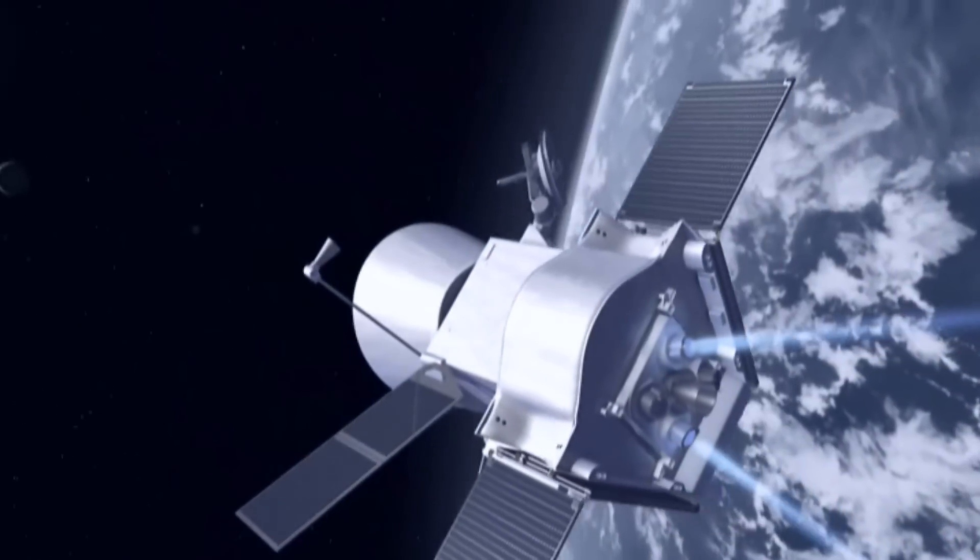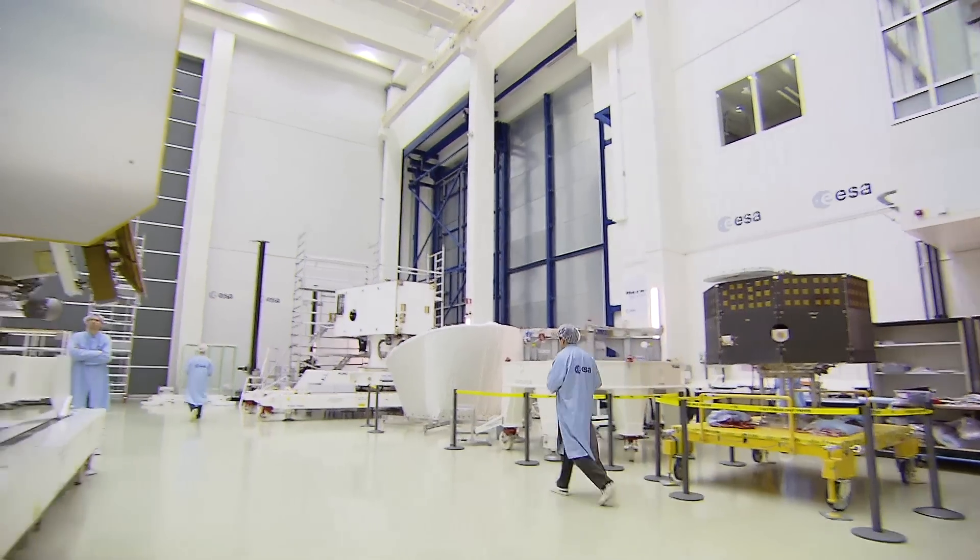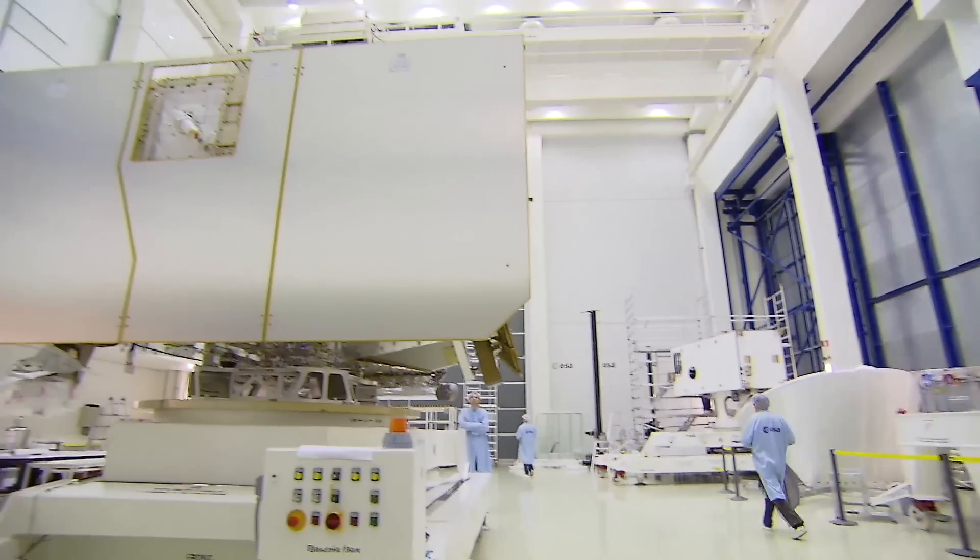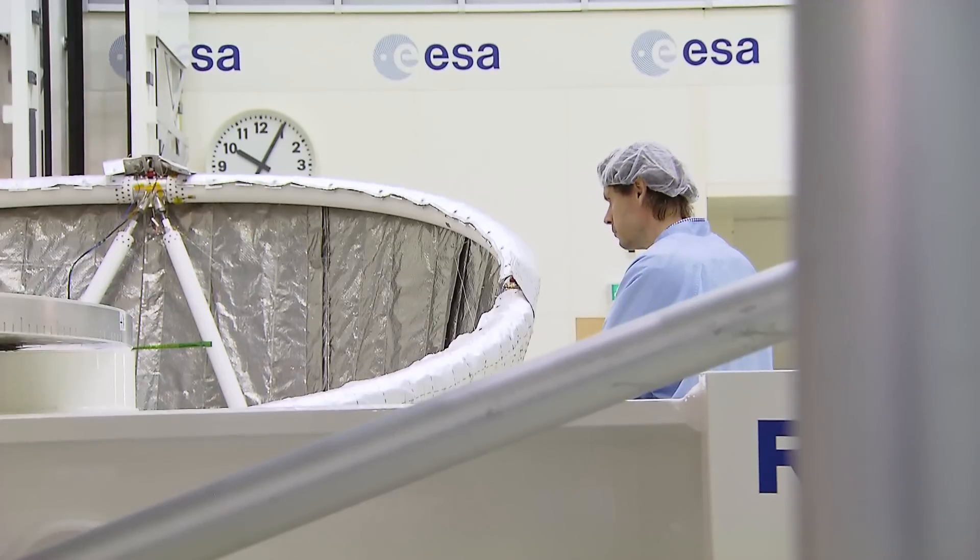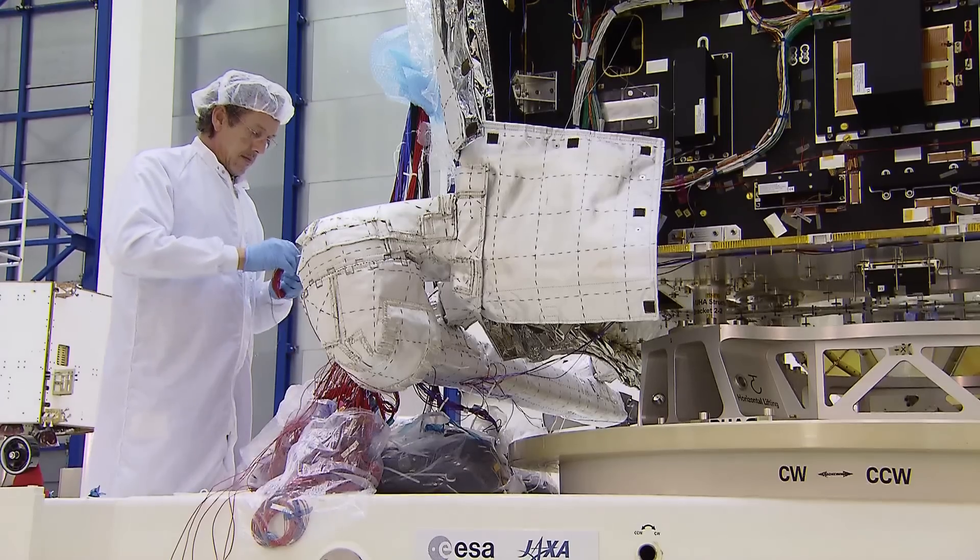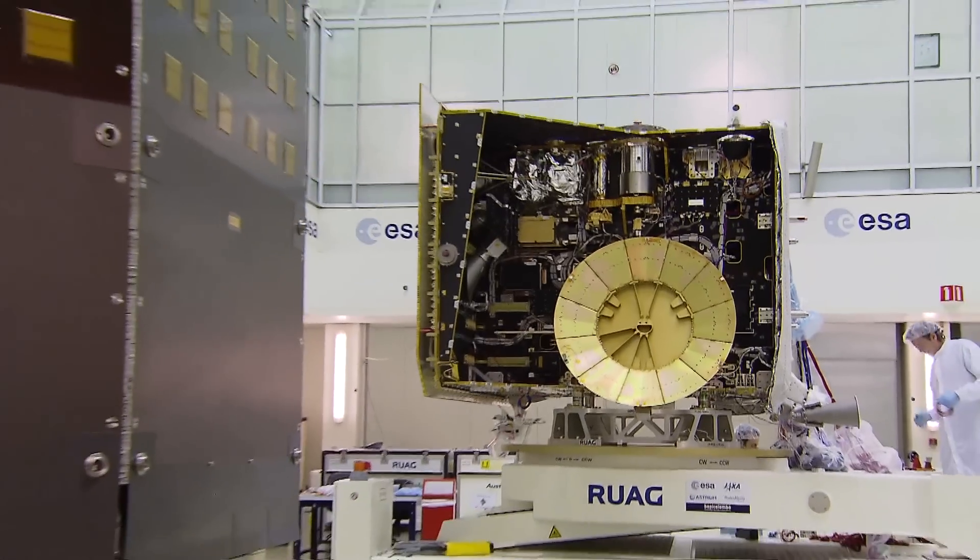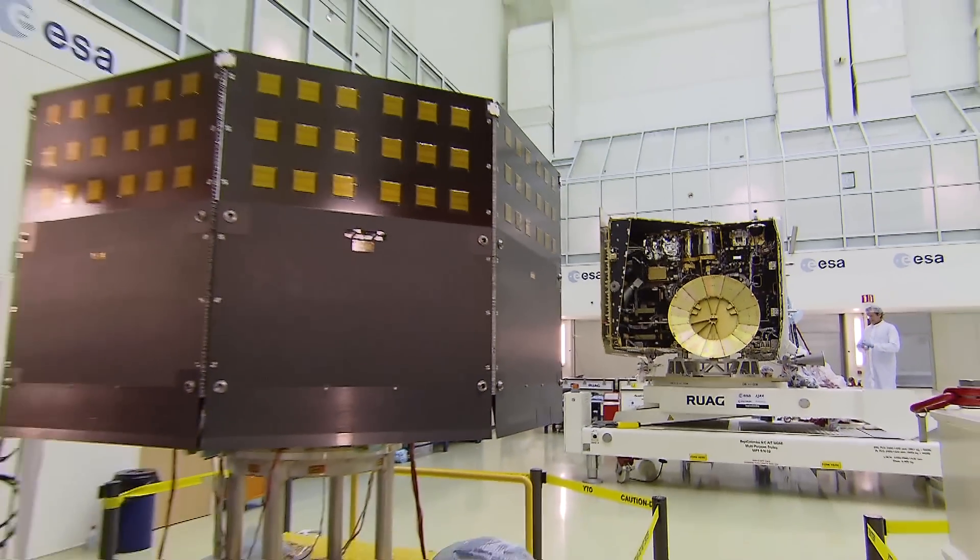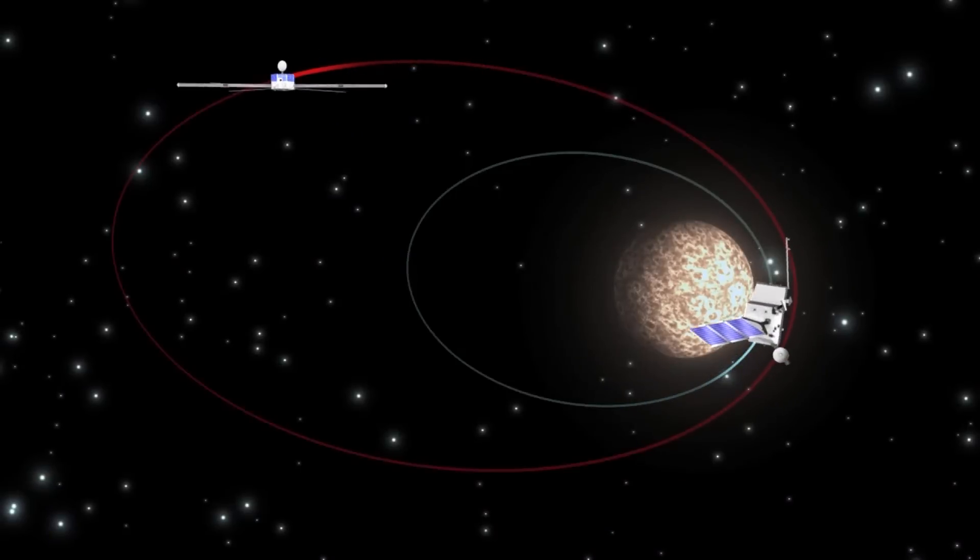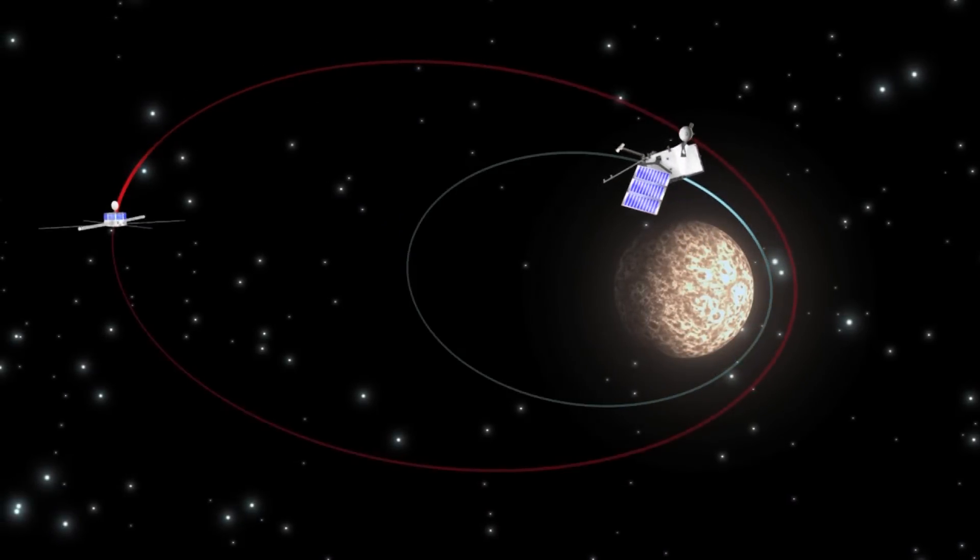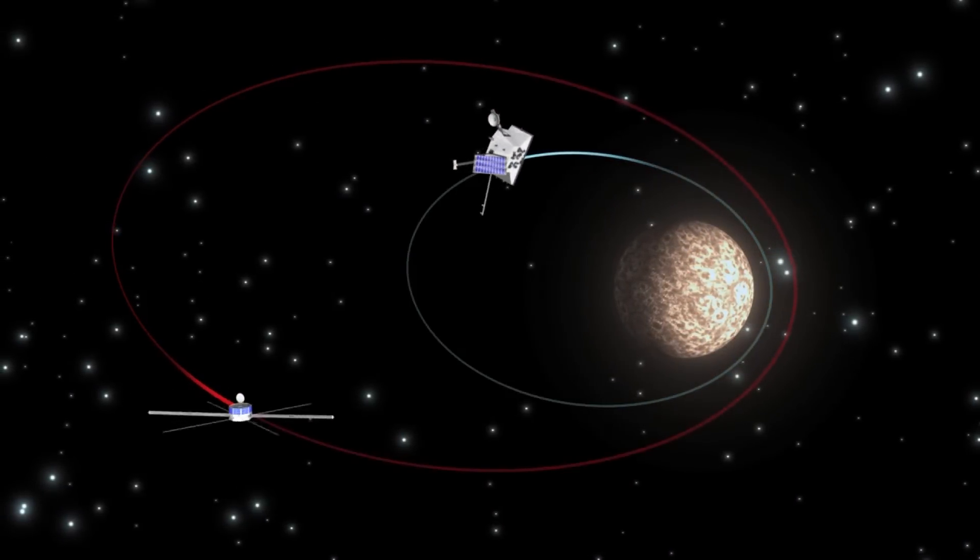Construction and testing of the spacecraft is well underway at the European Space Agency's Research and Technology Center in the Netherlands. The project is a joint mission with the Japanese and the spacecraft is divided into two probes, each with the job of studying different aspects of Mercury to gain a more complete picture.